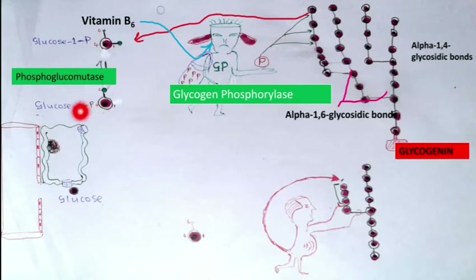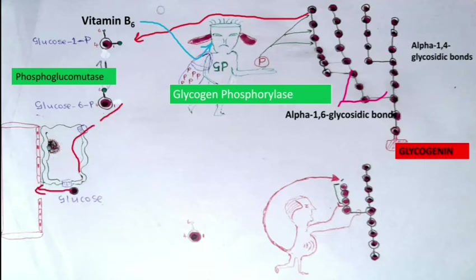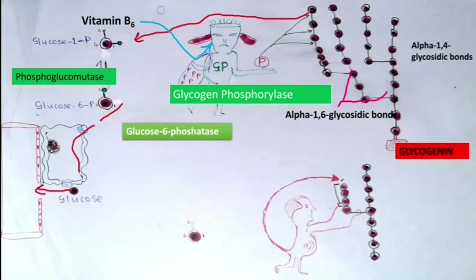From glucose-1-phosphate, phosphoglucomutase converts it to glucose-6-phosphate. Glucose-6-phosphate cannot be utilized in muscles because muscles lack glucose-6-phosphatase. This enzyme is located in the smooth endoplasmic reticulum; it cleaves the phosphate, releasing free glucose into the bloodstream.